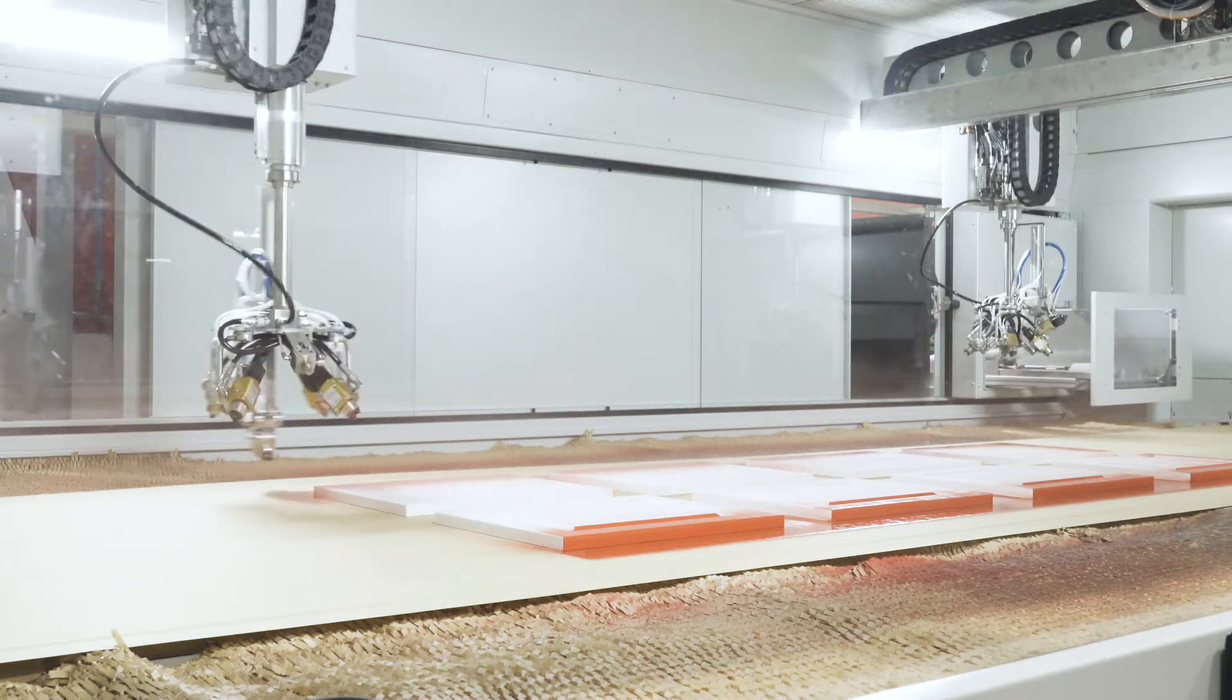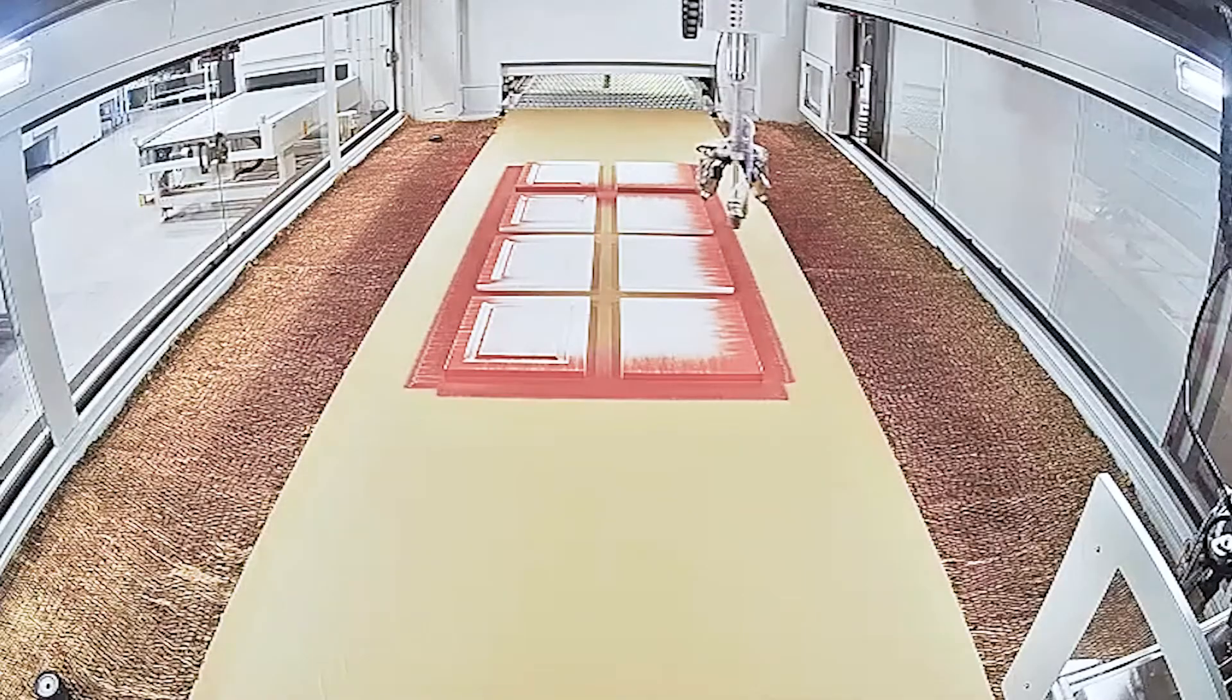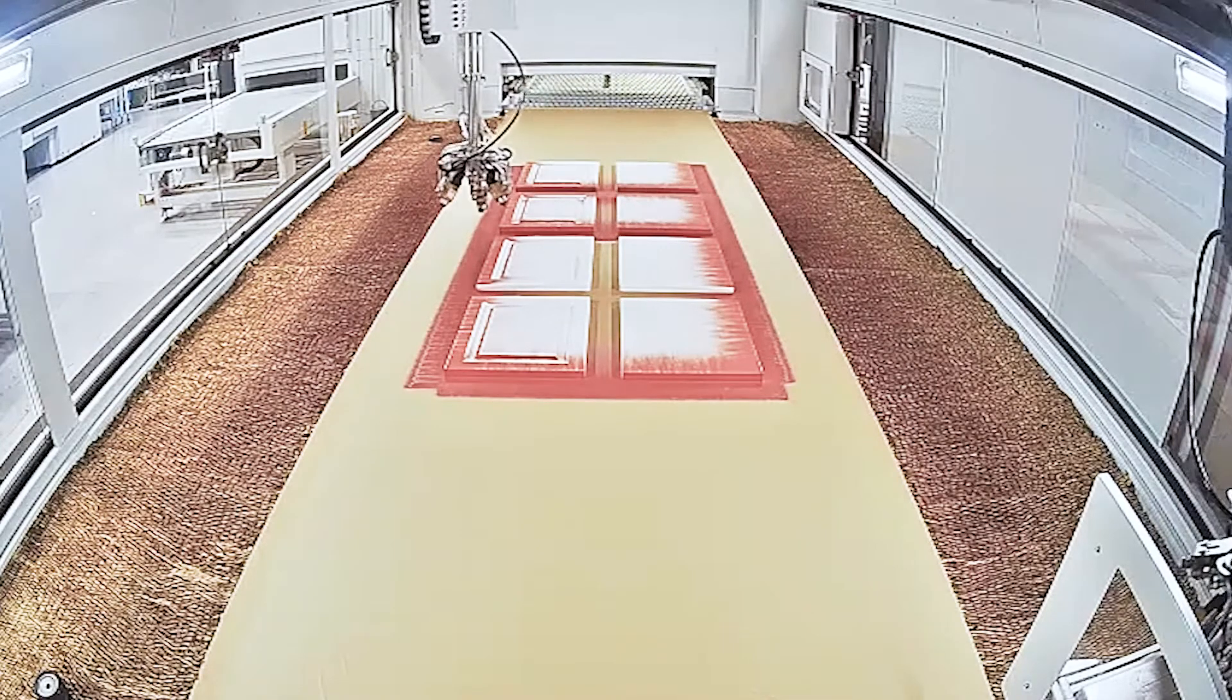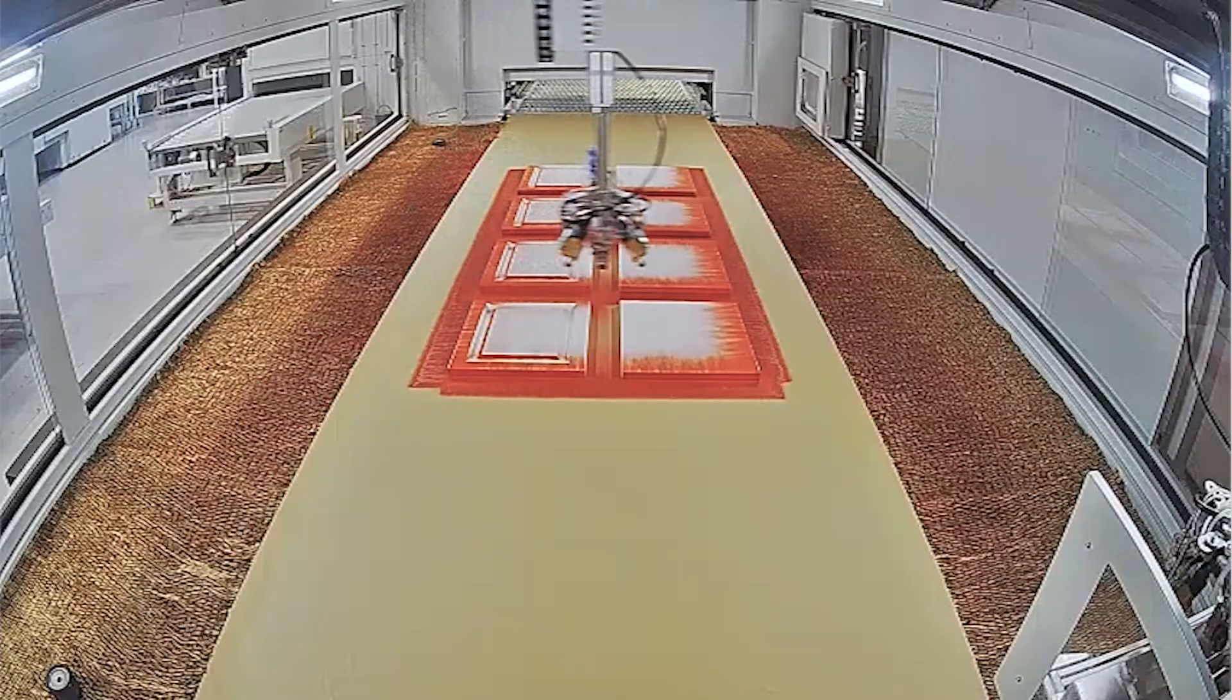It allows customers to use fewer operators. Once the machine has been started, one person can monitor the working conditions of the robot and the guns from a large screen at the loading end, while feeding the line at the same time.